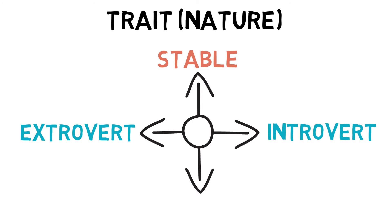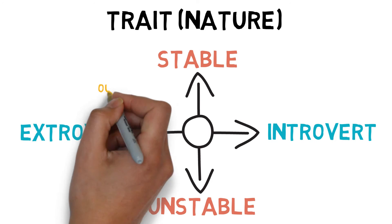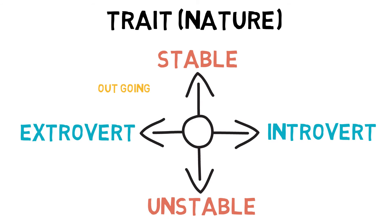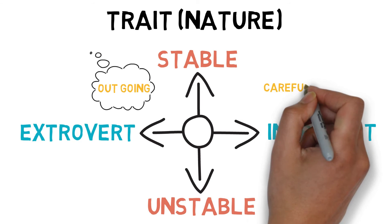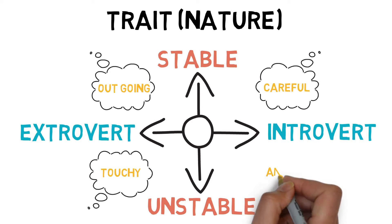Stable refers to unchanging behavioural patterns, and unstable refers to unpredictable behavioural changes. Therefore, a stable extrovert would be outgoing and carefree. A stable introvert would be careful and reliable. An unstable extrovert would be restless and touchy. And an unstable introvert would be anxious and pessimistic.